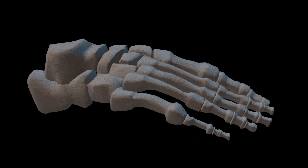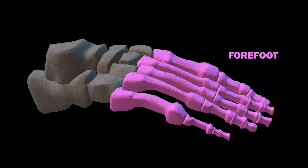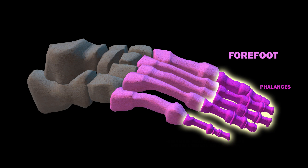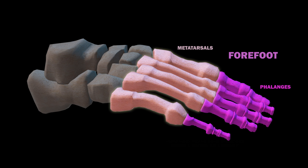The foot can be divided into the forefoot, the midfoot, and the hindfoot. The forefoot bears half your body's weight and is composed of the phalanges, your five toes, and the metatarsals, which are the longer bones they attach to.